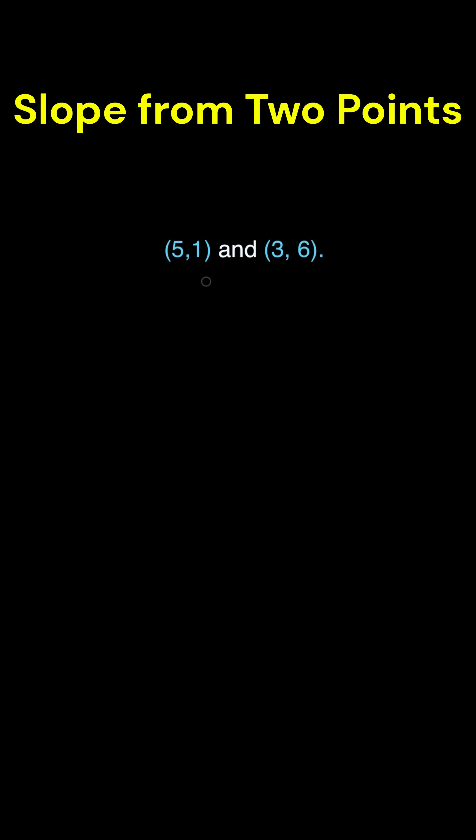How do we find the slope just by having these two different points? There is a formula called the slope formula. And what this says is that m equals the slope. So slope equals y2 minus y1 over x2 minus x1.